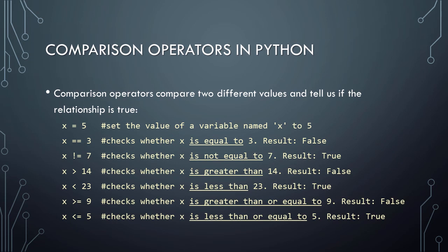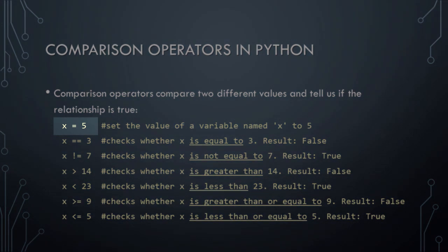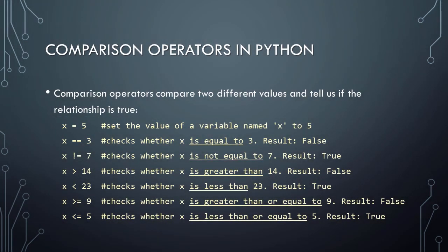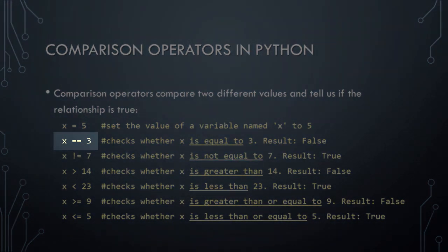Next, we'll take a look at comparison operators in Python. Comparison operators are useful because they allow us to compare two different values and determine whether the relationship is true. In the examples below, we'll learn about all six of Python's comparison operators. In this example, we begin by declaring a variable named x and setting its value to 5. Our first comparison operator is two equals signs, which means is equal to.